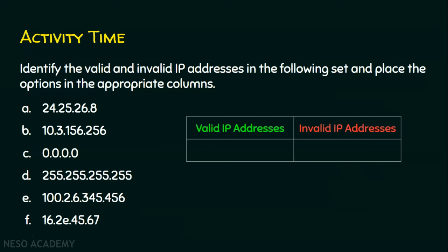If you are done, compare your answer with the answer I am depicting. The valid IP addresses are A, C, and D. The invalid IP addresses are B, E, and F. Now we will see why they are valid and why these are invalid.